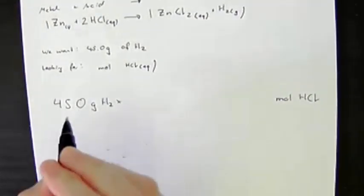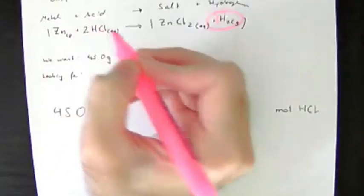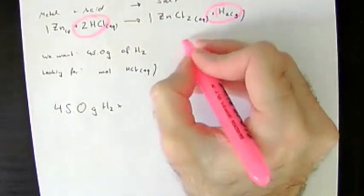If I had my hydrogen given in moles, then I could read my conversion out of the equation here because I know for each mole of hydrogen it's going to be two moles of hydrochloric acid.